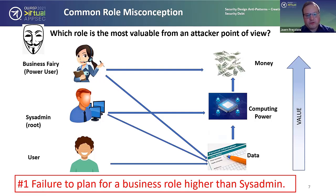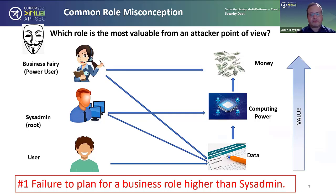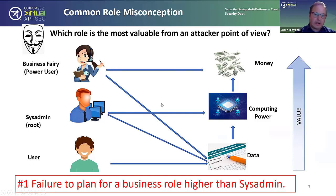So the first anti-pattern I want to point out is the failure to plan for a business role that's higher than sysadmin. The sysadmin should only be scoped to a system level and should conceptually be a slightly lower role than the business user role. This pattern will carry forward in many other anti-patterns of a technical nature that I'll describe later on.